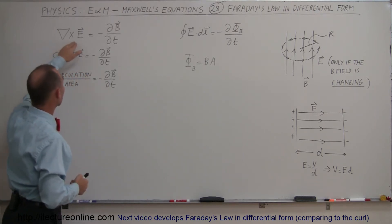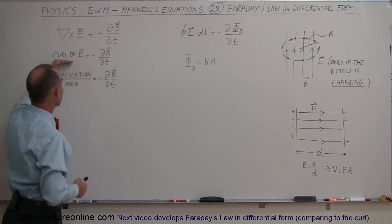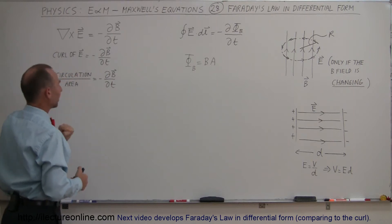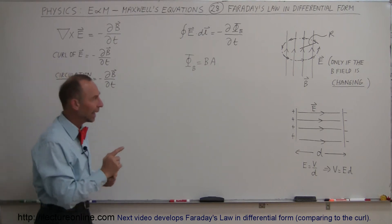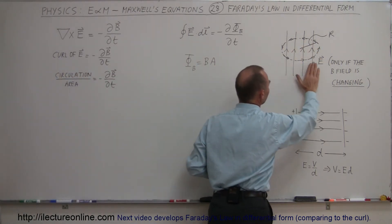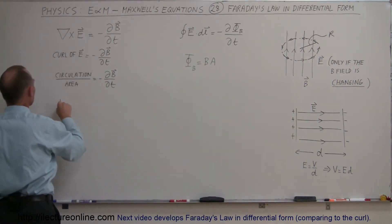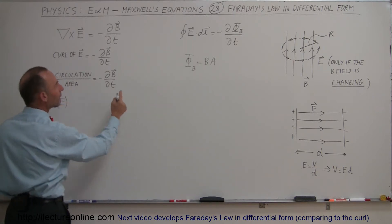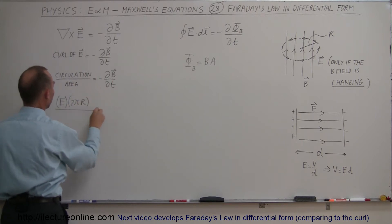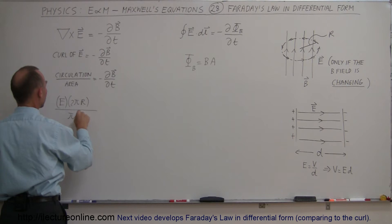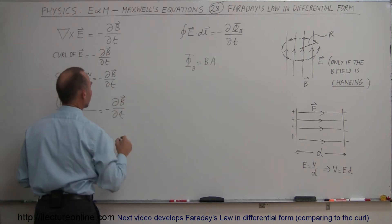The curl of the electric field means the del operator crossing with the electric field. By definition, the curl is the circulation divided by the area. The circulation is simply the strength of the E field times the distance around the circle — that's 2π times the radius. If we divide that by the area, which is πr², we get the negative of the changing B field with respect to time.